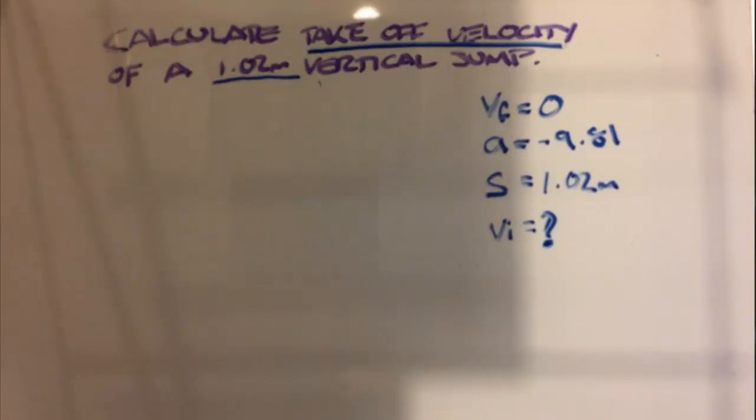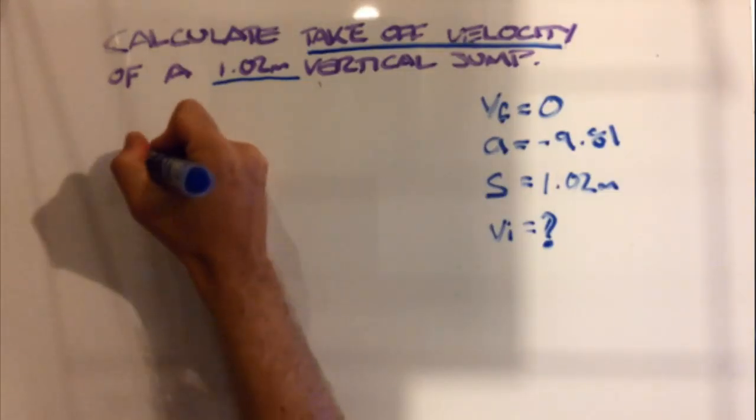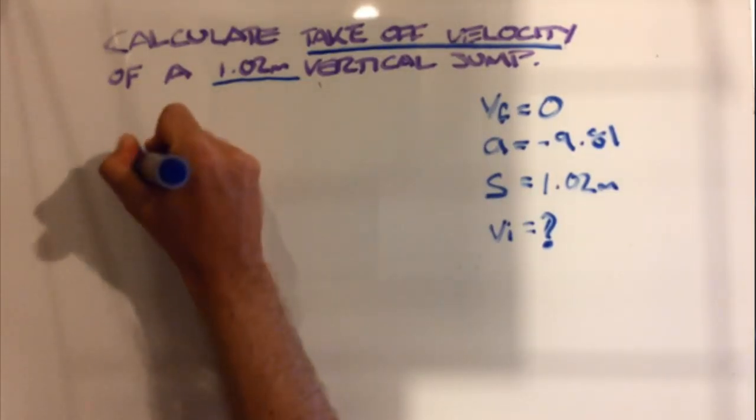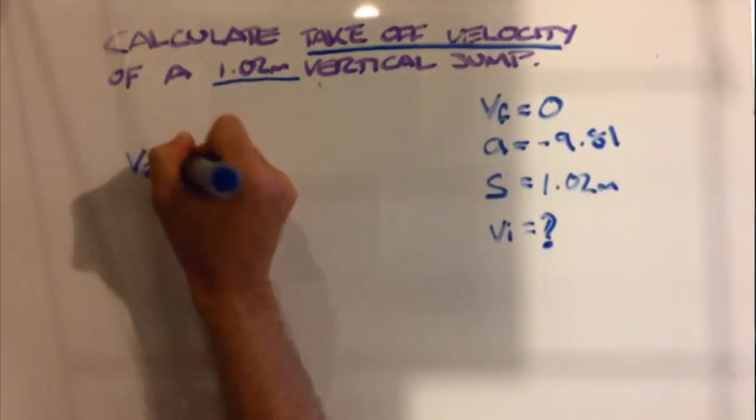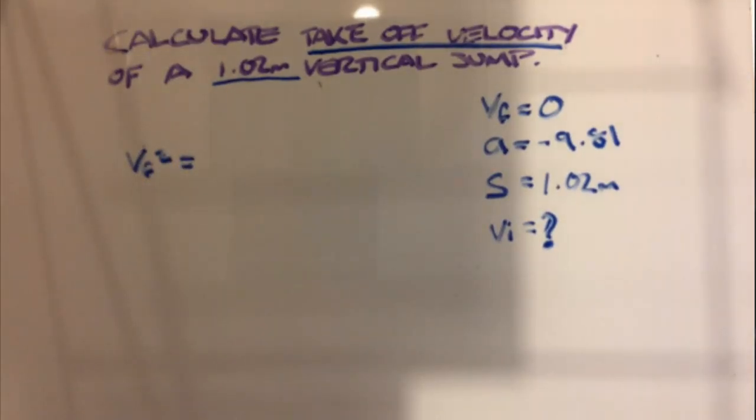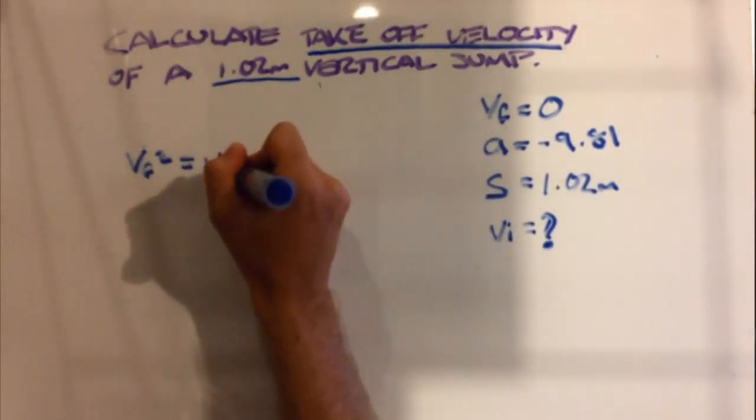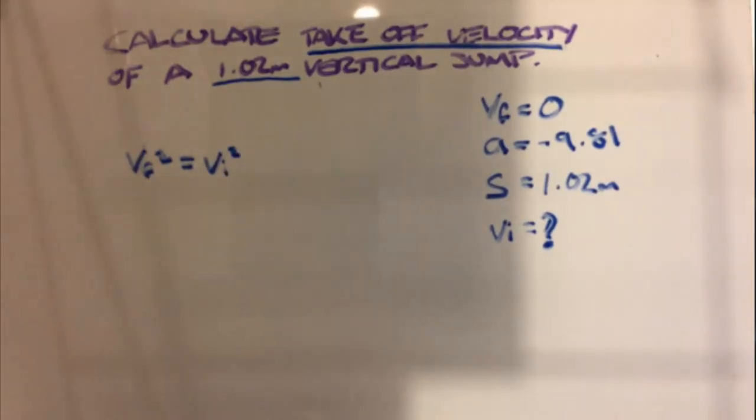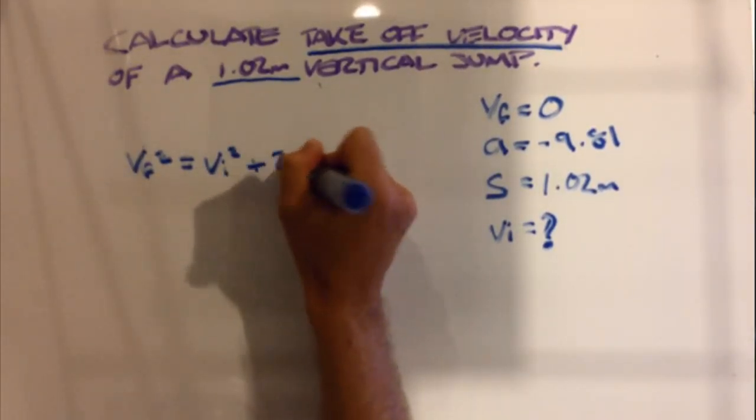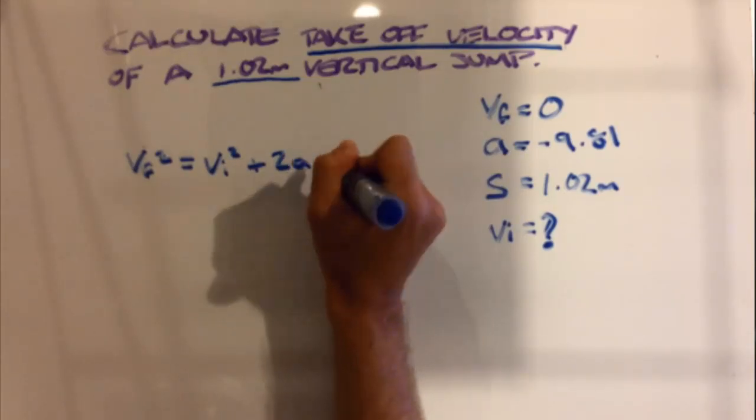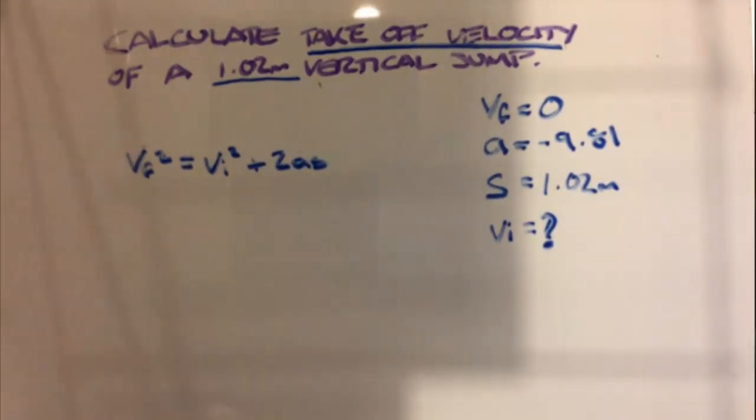We can then utilize our formula for identifying uniformly accelerated motion. That formula is vf² = vi² + 2 times acceleration times displacement.